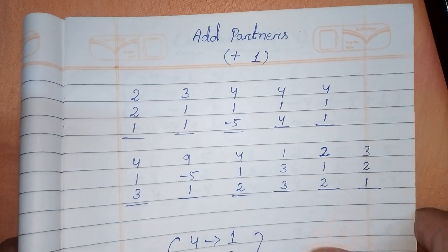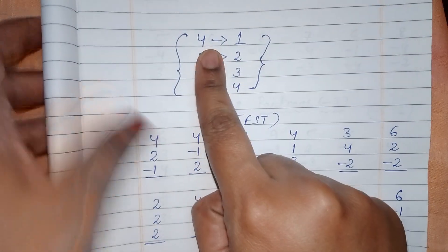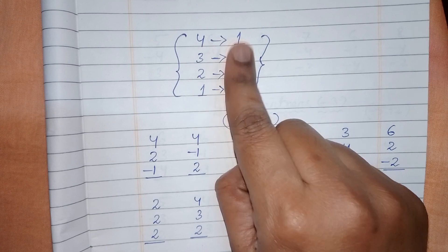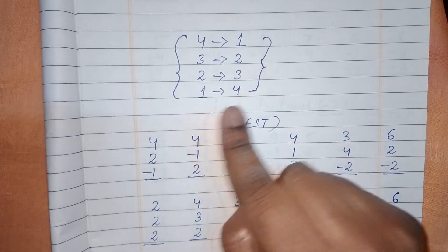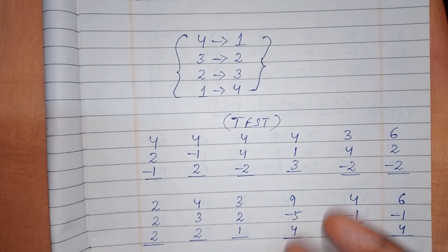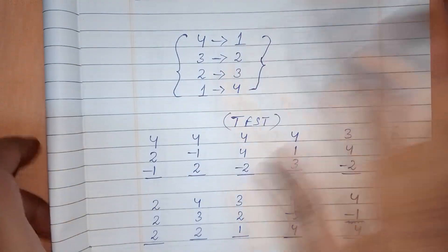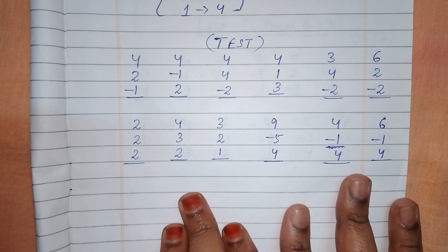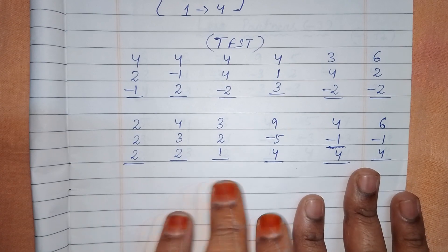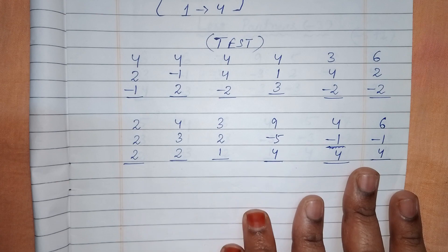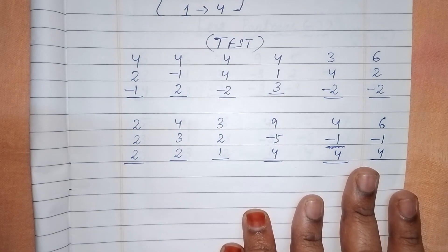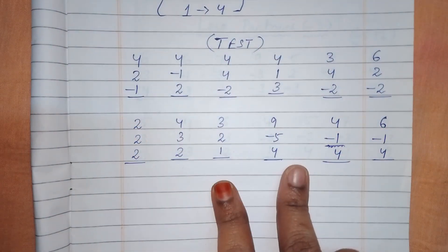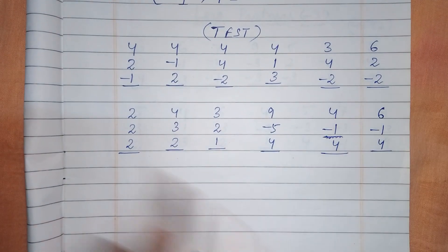So these are the rules: partner of four is one, because four plus one equals five; three plus two equals five; two plus three equals five; one plus four equals five. Partner means five. I have explained each partner in separate videos. Here I have written questions related to the ad partners of four, three, two, and one. By solving these questions you get a clear idea about all four partners. This is a test for you.